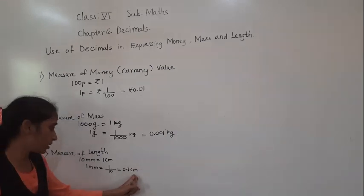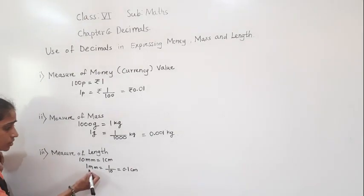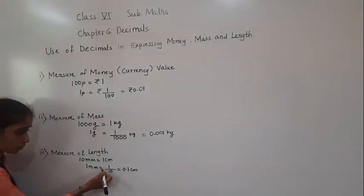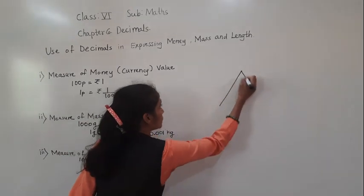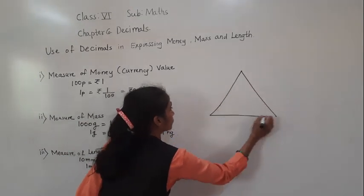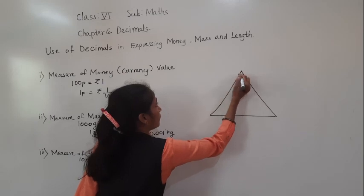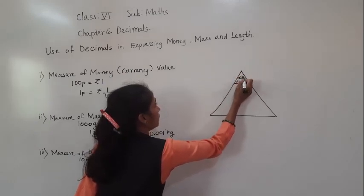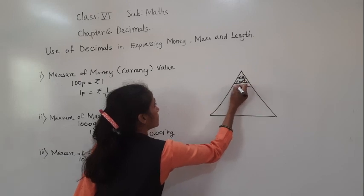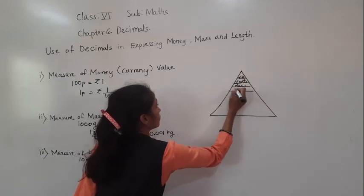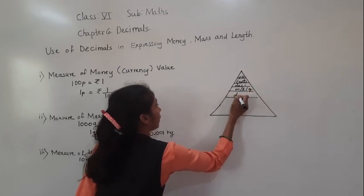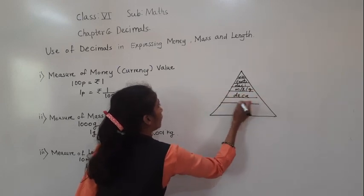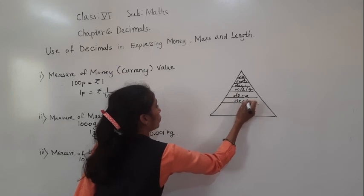Now 1 mm is equal to how much centimeter? We can also use the metric prefix triangle for this conversion. The triangle has: milli, basic unit, deka, hecto, kilo from bottom to top.